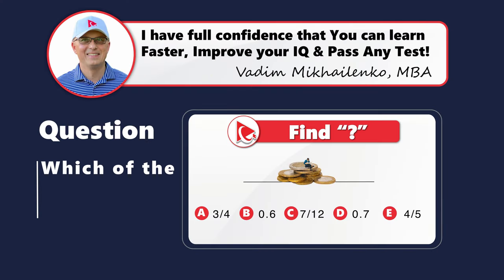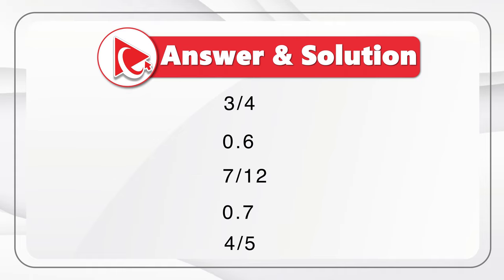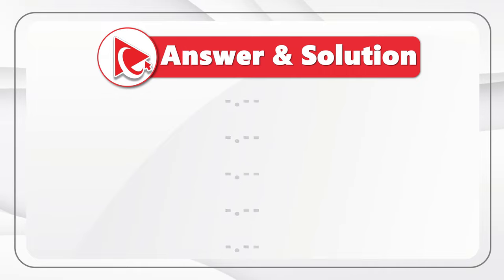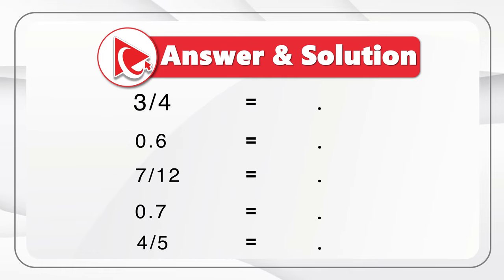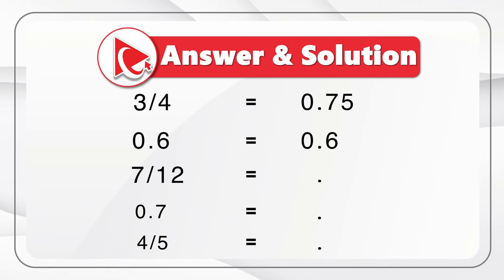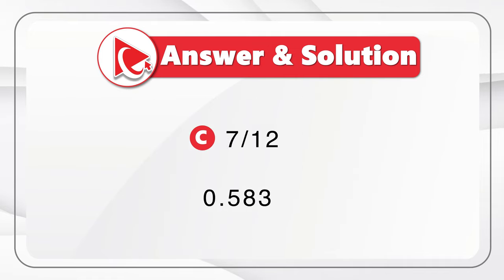To get to the correct answer, we need to convert all the values to a common format — either all decimals or all fractions. I chose decimal format: 3/4 is 0.75, 0.6 is 0.6, 7/12 is 0.583, 0.7 is 0.7, and 4/5 is 0.8. Now you can easily see that the smallest value is choice C, 7/12, which is approximately 0.58333.